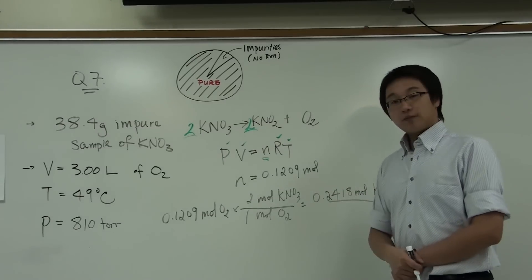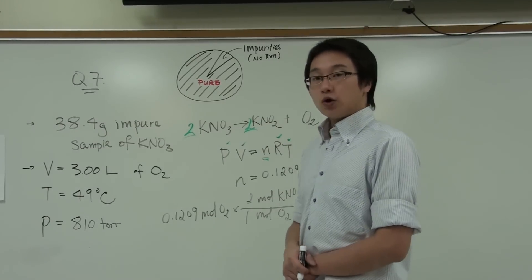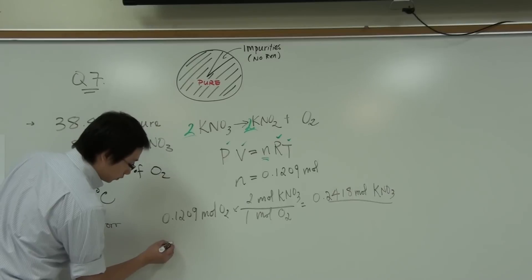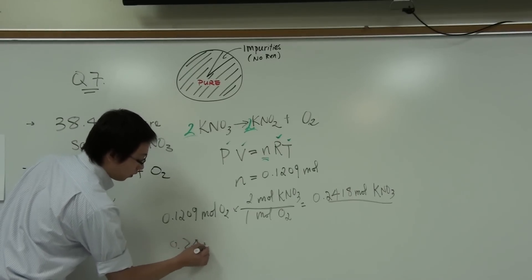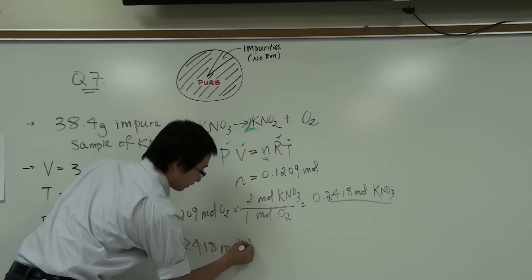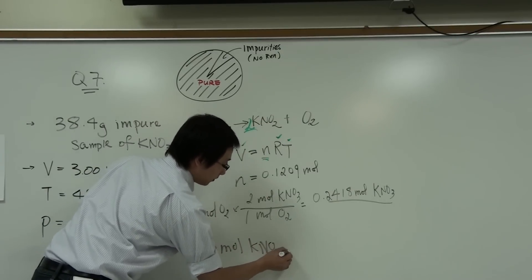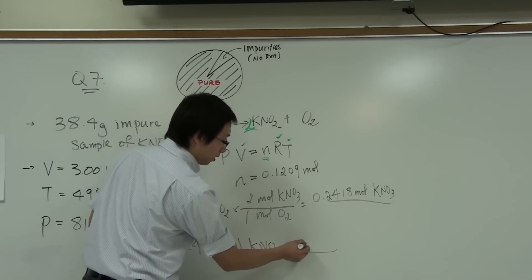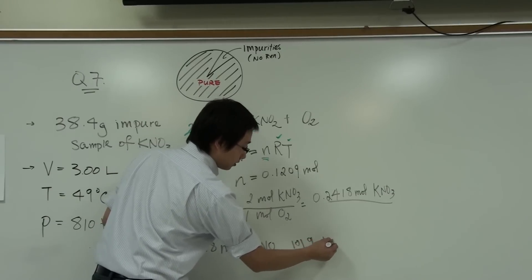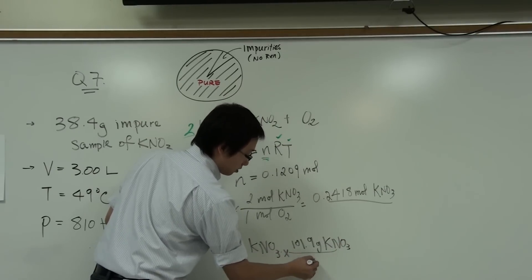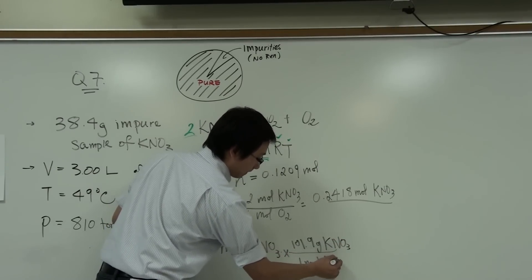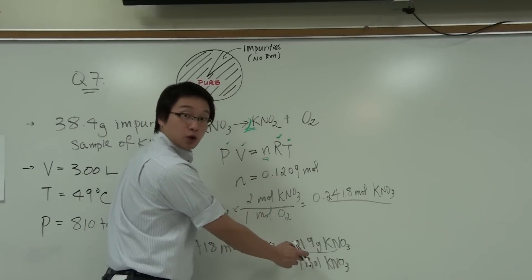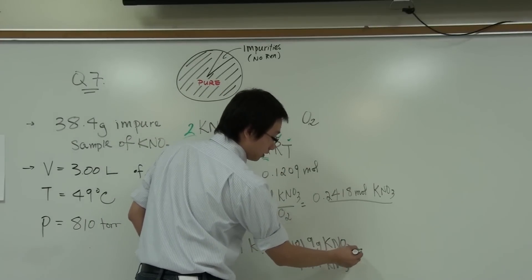And if you look at the periodic table, you can find out the molar mass of KNO3. And now you have that many moles of KNO3, then you can simply use the molar mass of KNO3 to find out the mass of KNO3. So you have 0.2418 moles of KNO3. And if you look at the periodic table, you can find out the molar mass of KNO3, which is going to be 101.9 grams. So we can now get the amount in grams.